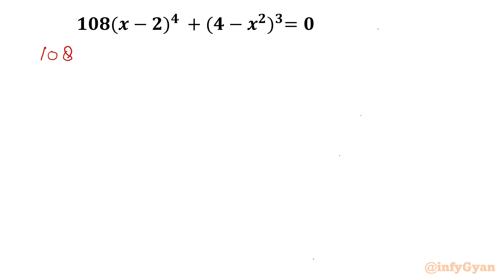108 times (x-2) to the power 4, minus if I take common, it will give us minus outside (x² - y)³ equals 0.